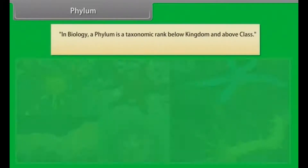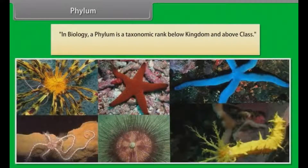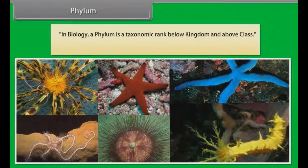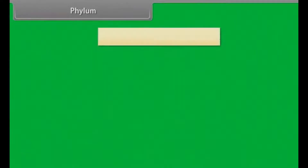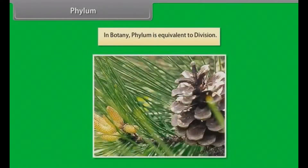In biology, a phylum is a taxonomic rank below kingdom and above class — a group of closely related classes having certain common characters. In botany, phylum is equivalent to division.